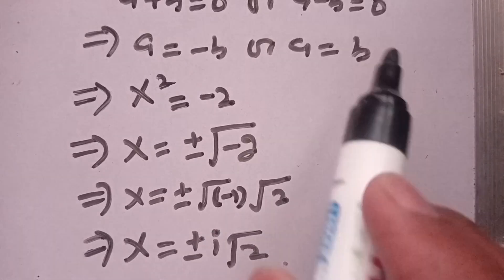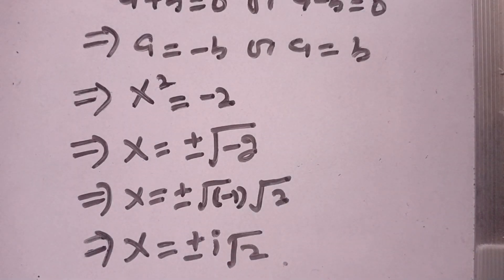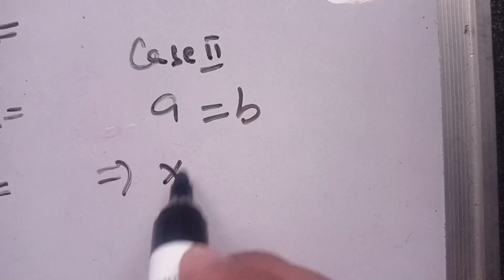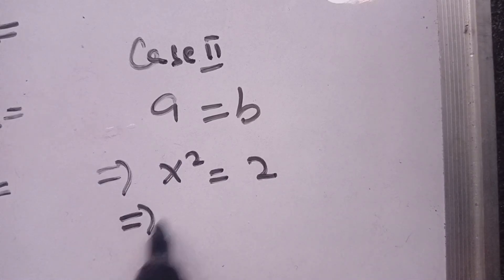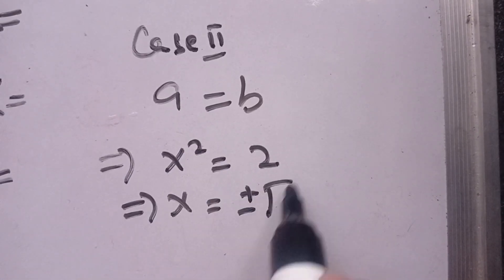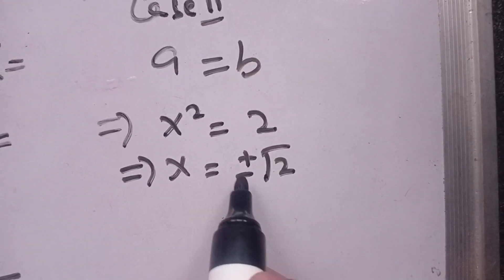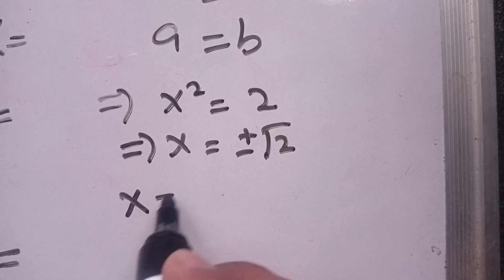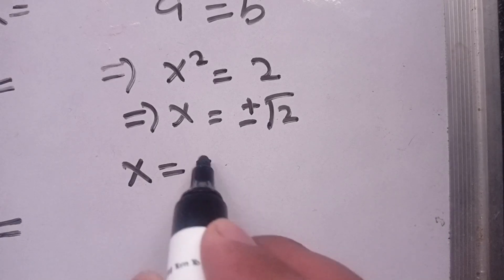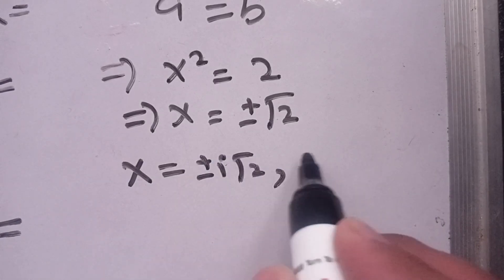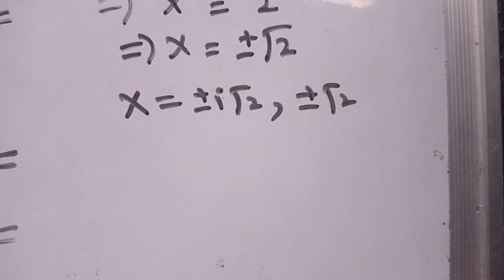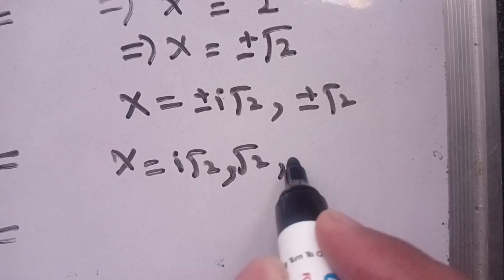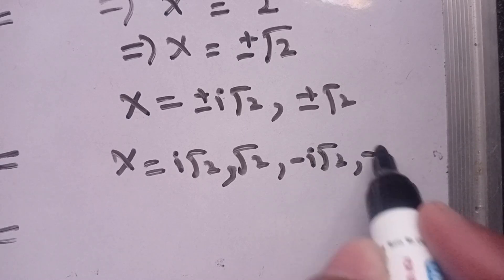In the second case, a equals b, meaning x squared equals 2, which implies x equals plus or minus square root of 2. So there are two values of x from each case. The complete set of values is: x equals plus or minus iota root 2, and x equals plus or minus root 2. Thus x equals iota root 2, root 2, minus iota root 2, and minus root 2.